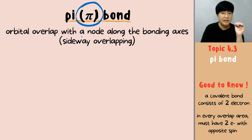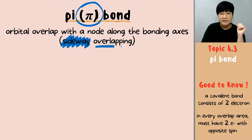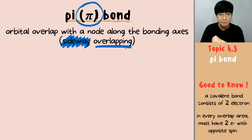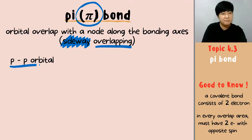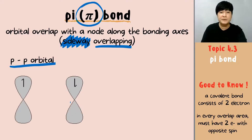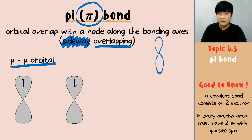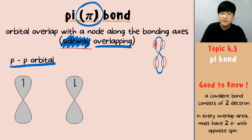Now let's look at pi bond. If sigma bond is head-to-head or end-to-end overlapping, pi bond uses sideway overlapping. The only combination that can form pi bond is pp orbital, using two p orbitals. The sideway overlapping uses the side of the p orbital. Each p orbital has one electron with opposite spin — one clockwise, one anticlockwise — and they overlap along the side.